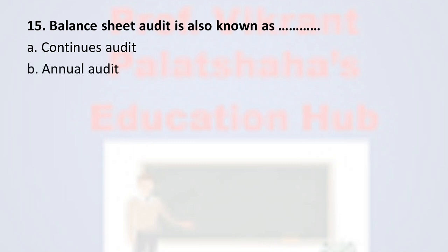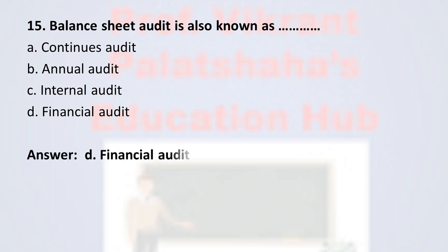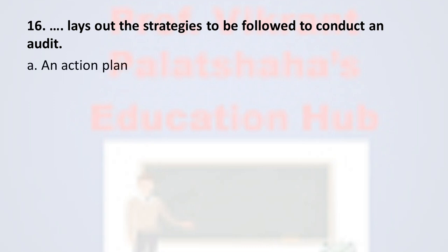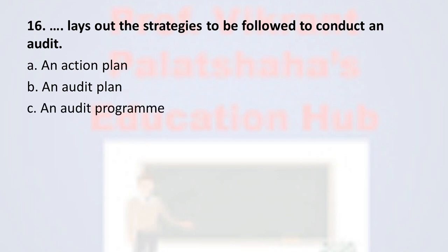Question number fifteen: balance sheet audit is also known as — option A continuous audit, option B annual audit, option C internal audit, and option D financial audit. The correct option is option D, financial audit. Question number sixteen: this lays out the strategies to be followed to conduct an audit — option A an action plan, option B an audit plan, option C an audit program.